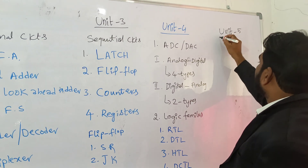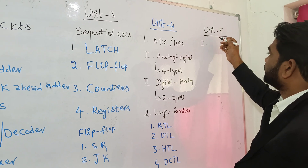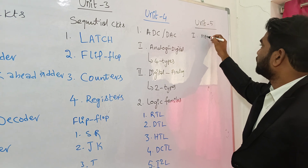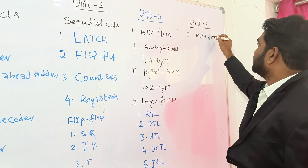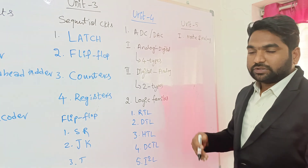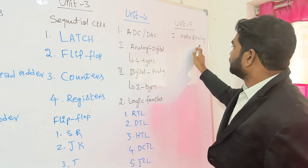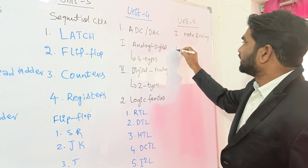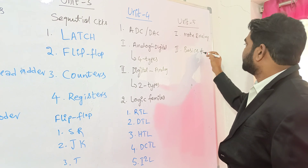Unit five contains two topics. The first topic is Moore and Mealy machines. In Moore and Mealy machines we are going to learn about algorithms — how any digital circuit works and how to design an algorithm. The second part of unit five is Basics of Memories.